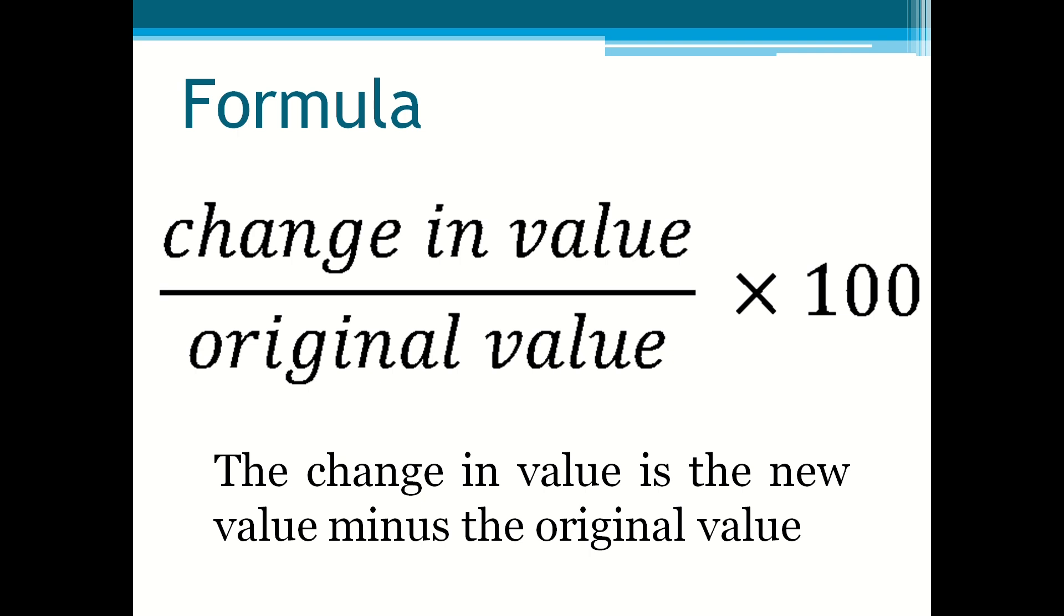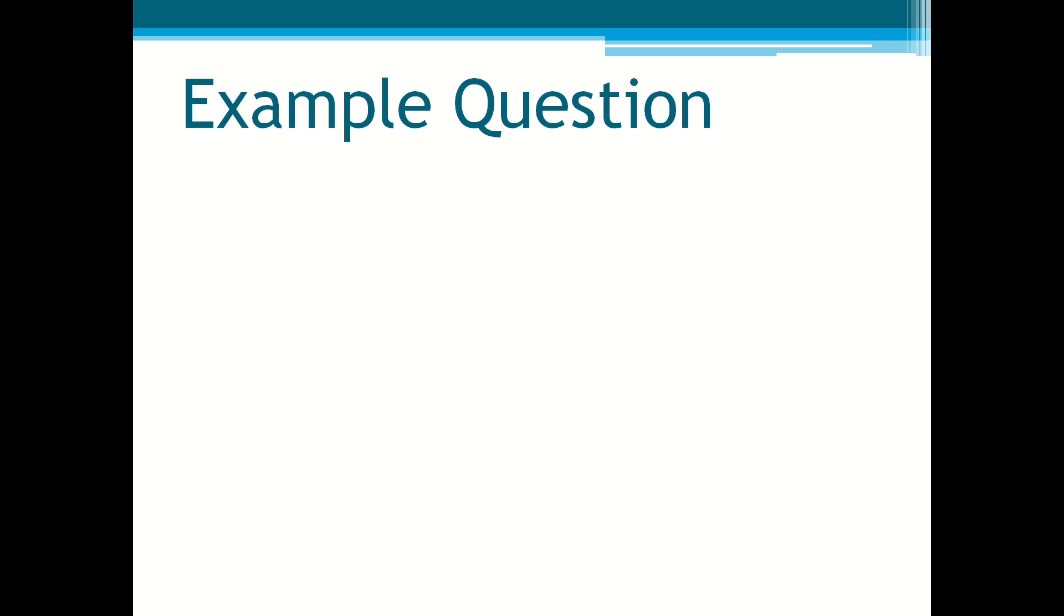So we'll look at the first example question. A pair bought a house for £784,698. The pair sold the house for £795,481. Calculate the percentage profit the pair makes.